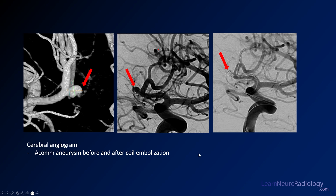Here you see it again in the coronal view, and in the sagittal view — this is a four millimeter aneurysm. If you do an angiogram, you can see the same thing: your carotid, your A1 segment, and this laterally directed outpouching off of the ACOM. You can do 3D reformats from an angiogram and make some measurements to plan your treatment. They've done endovascular therapy here, placed some coils. You can see on the contrast run there's not very much filling of that aneurysm anymore — this is after coil embolization.